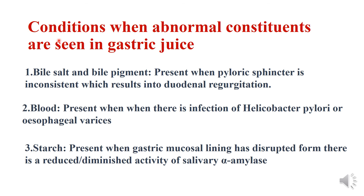The various abnormal constituents seen in gastric juice have specific reasons. Bile salts and bile pigments are generally due to pyloric sphincter inconsistency, which leads to duodenal regurgitation — when the pyloric sphincter is not working, duodenal contents may have a reverse flow into the stomach. Blood is seen generally due to infection such as Helicobacter pylori or esophageal varices. Starch is seen when the gastric mucosal lining is disrupted or due to diminished activity of salivary amylase.